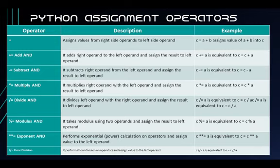The subtract AND operator subtracts the right operand from the left operand and assigns the result to the left operand. The divide AND operator divides the left operand by the right operand and assigns the result to the left operand. The modulus AND operator takes the modulus using two operands and assigns the result to the left operand. The exponent AND operator performs exponential power calculations and assigns the value to the left operand. The floor division AND operator performs floor division and assigns the value to the left operand.